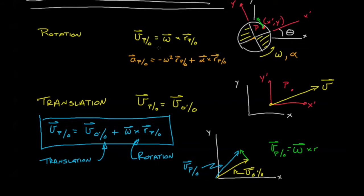So we have something slightly more complicated than the velocity, but the ideas are the same. Instead of just a tangential velocity, we have a centripetal acceleration, and we also have some component that accounts for the change in angular velocity.